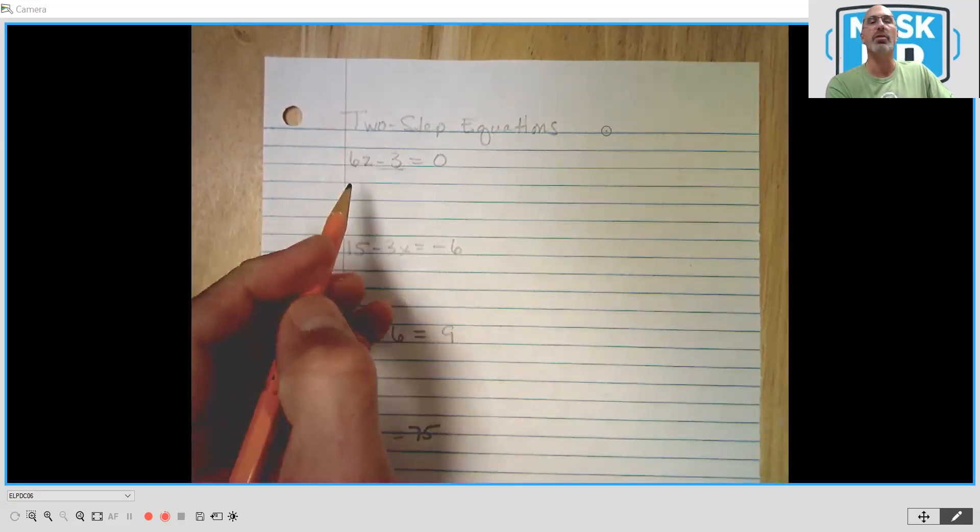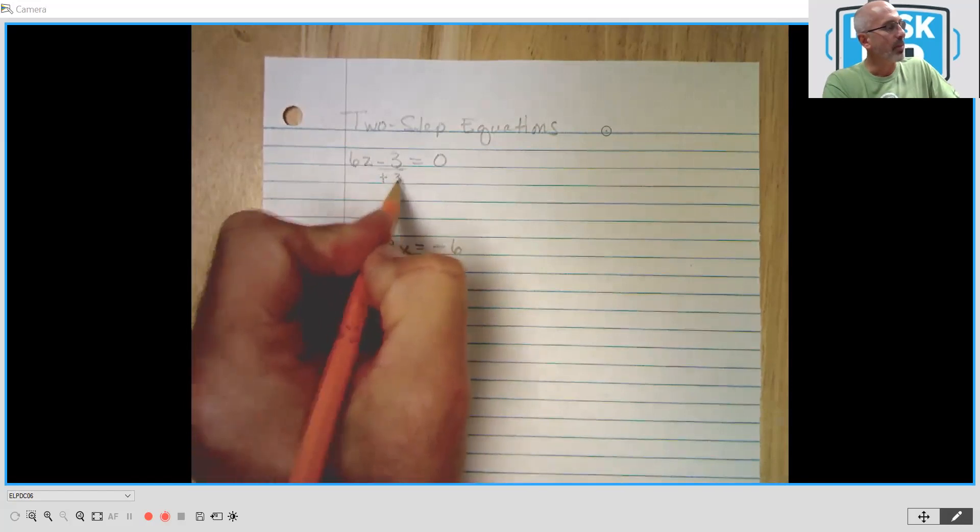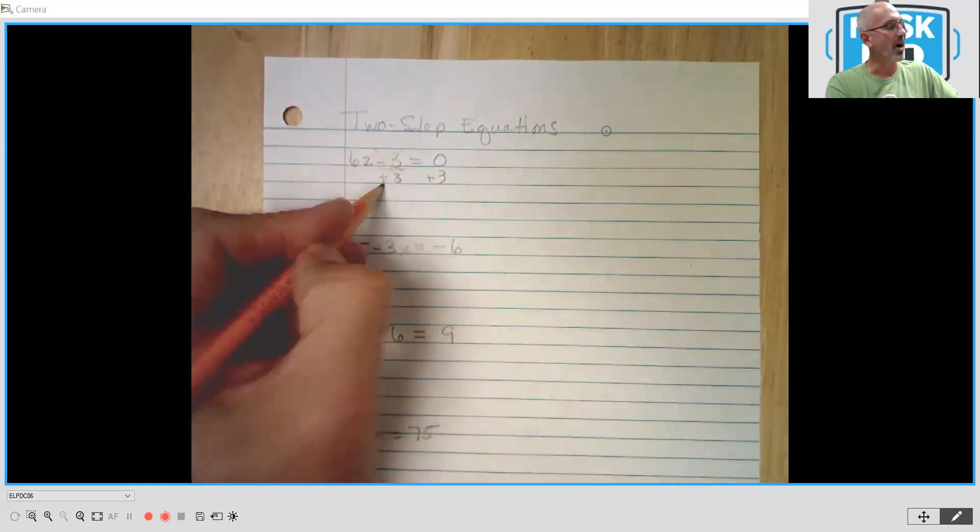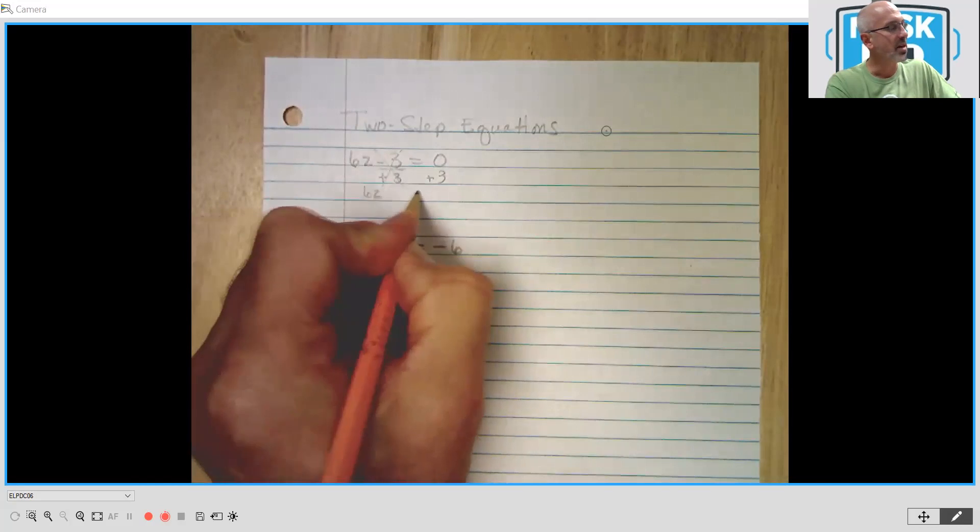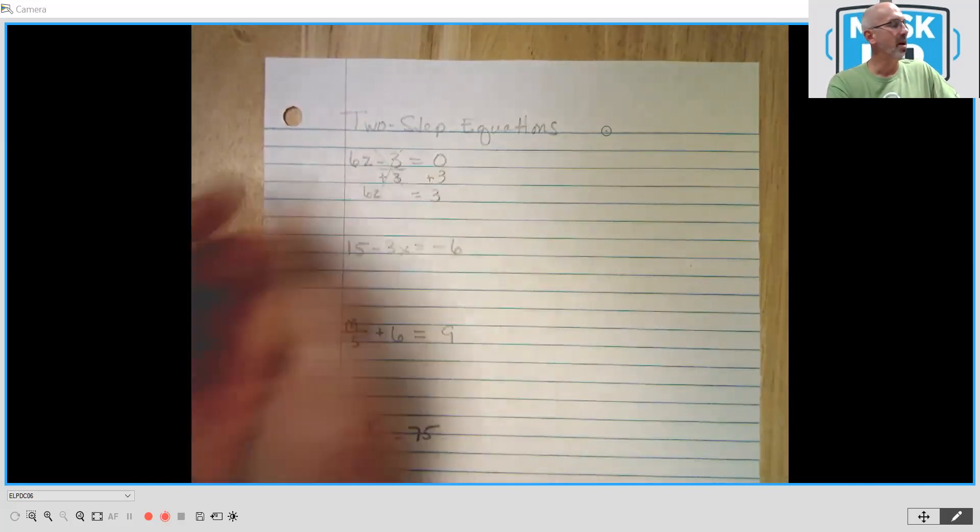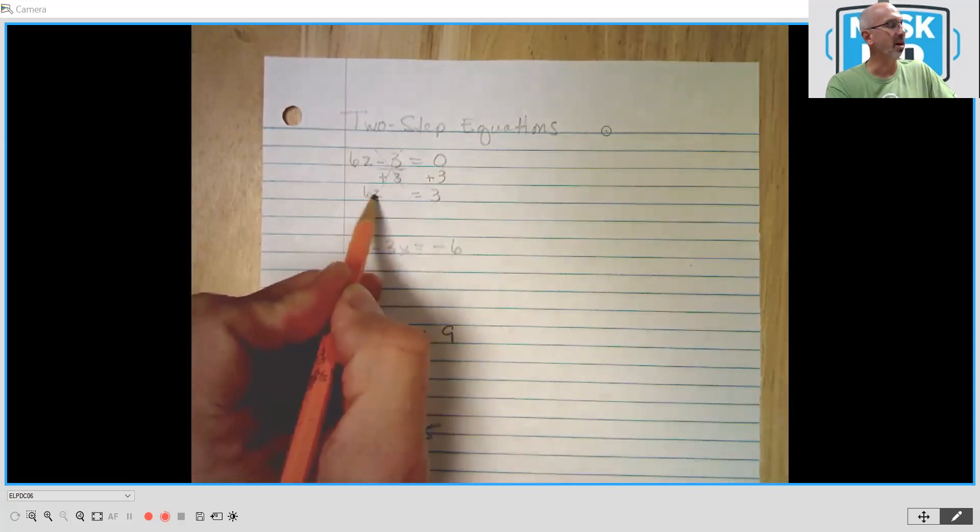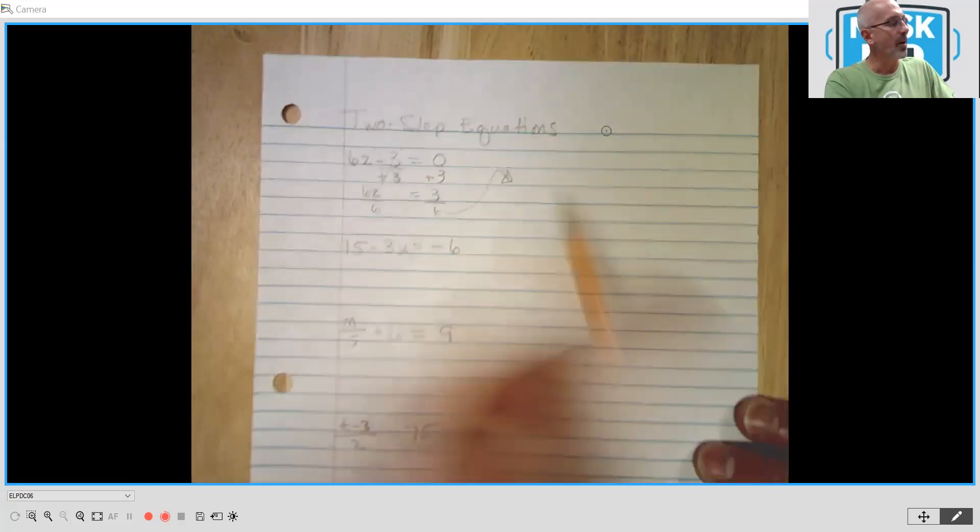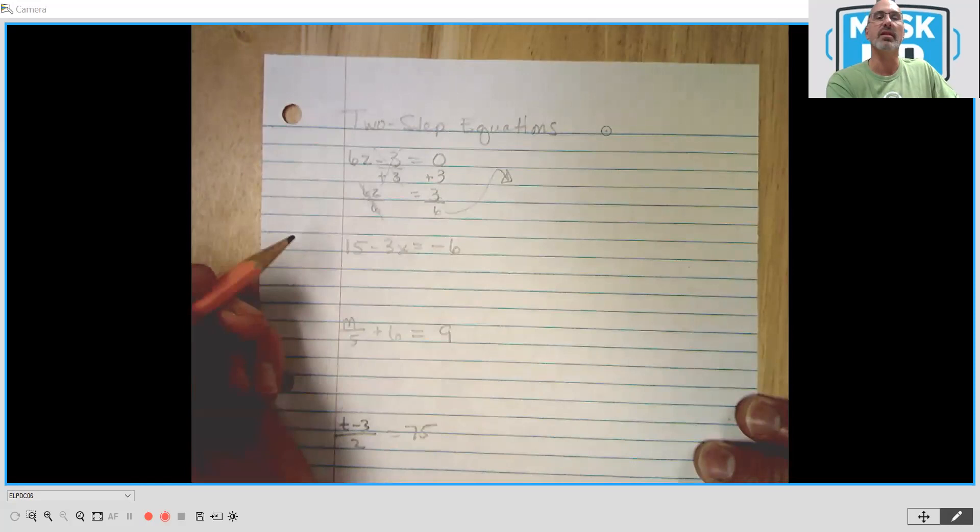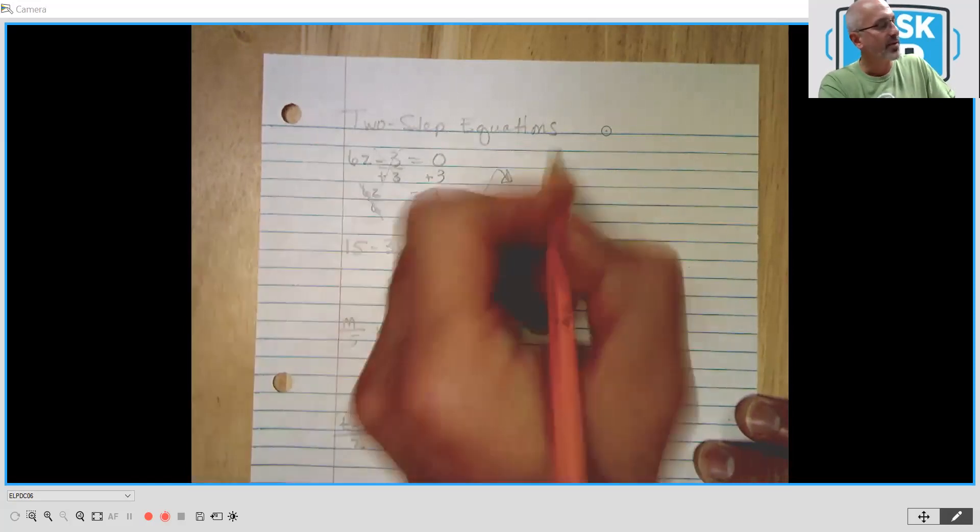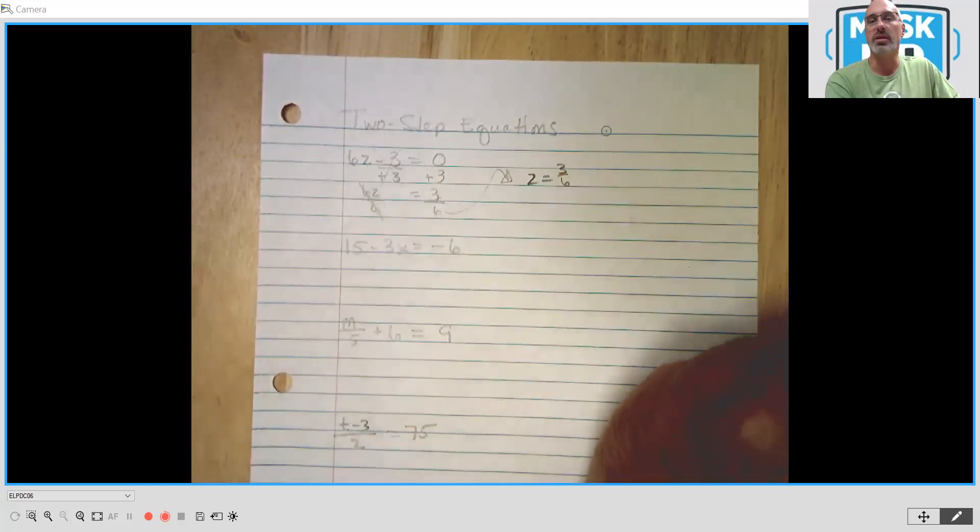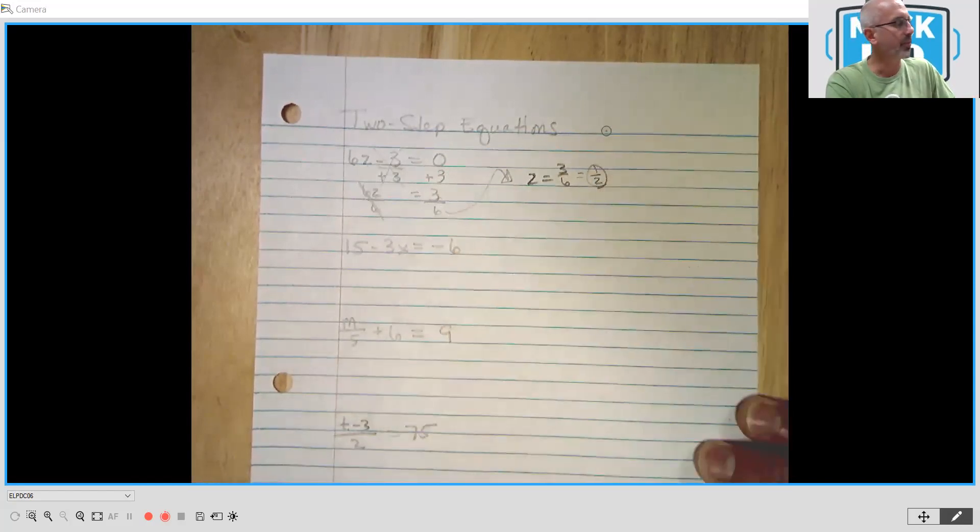So in this case, we have a minus 3. So we're going to do a plus 3 on both sides to get rid of that minus 3. So this drops off. We're left with 6Z equals 3. And then we see that as six times Z equals 3. So in order to undo the multiplication, we are going to divide by 6. The six and six divided by six disappear. Then we're left with Z equals 3/6. And we always put it in simplest form. We know that 3/6 is one half.